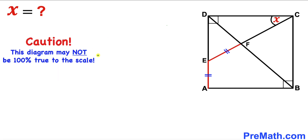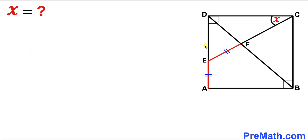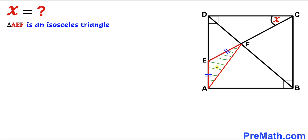Please keep in mind that this figure may not be 100% true to scale. Let's get started with the solution. First, I have connected point A and point F, and as a result we get triangle AEF as an isosceles triangle since these two sides are congruent. So this angle is going to be congruent to this angle. Let me label this angle as alpha — then this angle has got to be alpha as well.